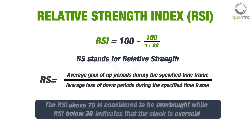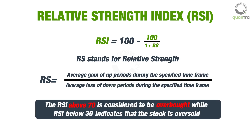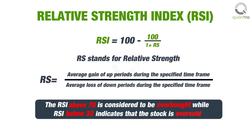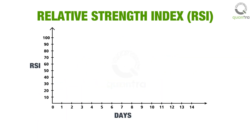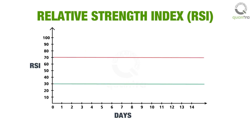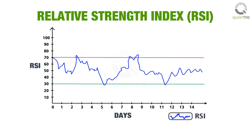Traditionally, an RSI above 70 is considered to be overbought, while an RSI below 30 indicates that the stock is oversold. Consider this graph of RSI of a stock, where the red line shows the RSI value of 70 and the green line shows the RSI value of 30. Whenever the RSI graph touches or crosses the red line, it signals that the stock is overbought and the price trend will reverse — hence, sell the stock.